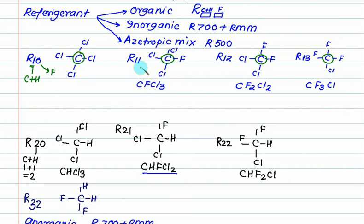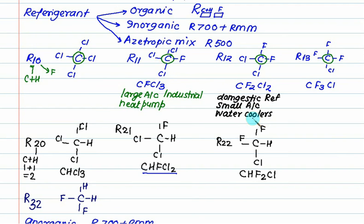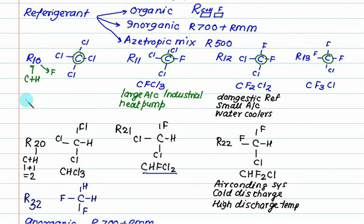R717 is used for large air conditioners. R12 is normally used for domestic refrigerators and water coolers. R12 is cheaper compared to R11, that's why it's used in domestic and small AC. All these refrigerants contain chlorine, and chlorine is responsible for ozone depletion.